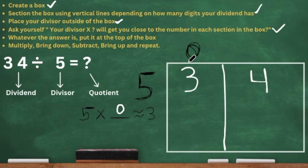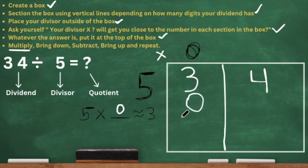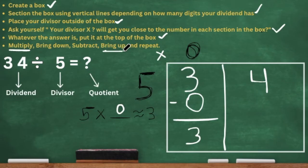Now we multiply. We take that 0 at the top and multiply it by our divisor. 0 times 5 is 0, so we bring the 0 down. Then we subtract: 3 minus 0 is 3. Now we bring up — we're going to bring that 3 up. The 3 goes before the digit that's already there. That's why we need space before that digit.